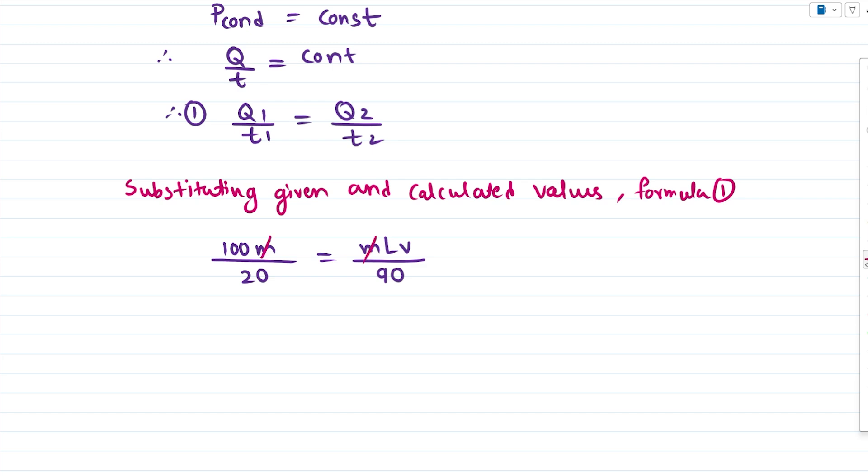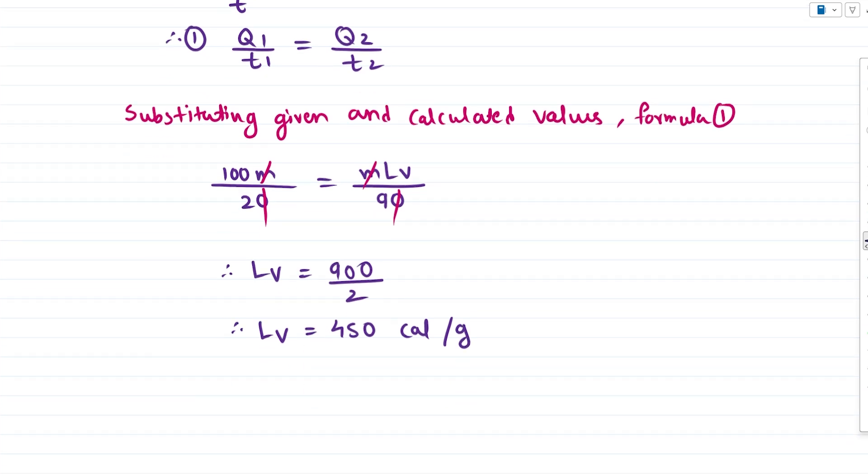Now for this particular term, what are the terms that can get cancelled? Well, here m and here m cancels because in both cases mass of water is the same. This term cancels. Therefore LV is now 9 into 100, 900 divided by 2. Therefore the value of latent heat of vaporization for water is 450 calories per gram because that was the units that we used.